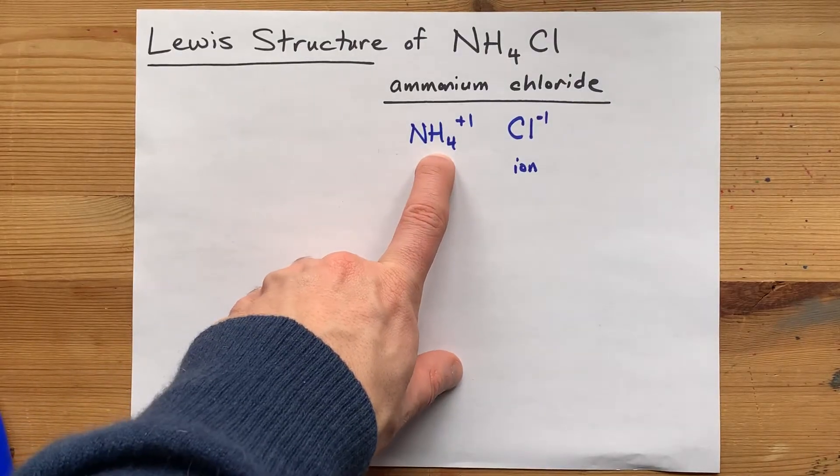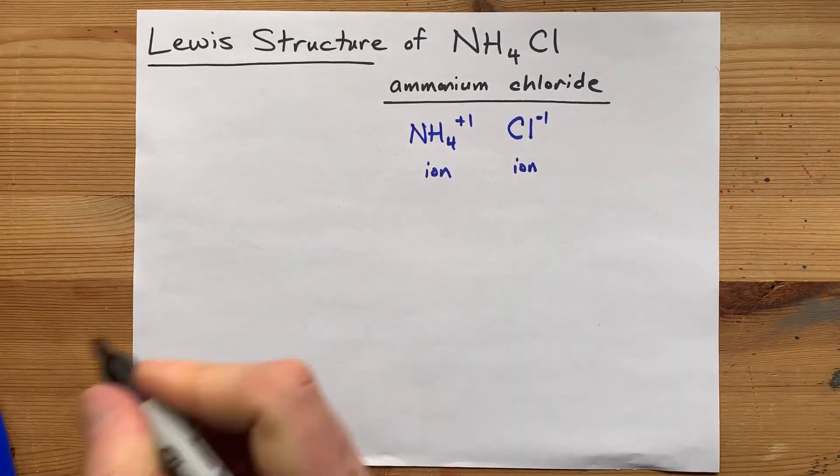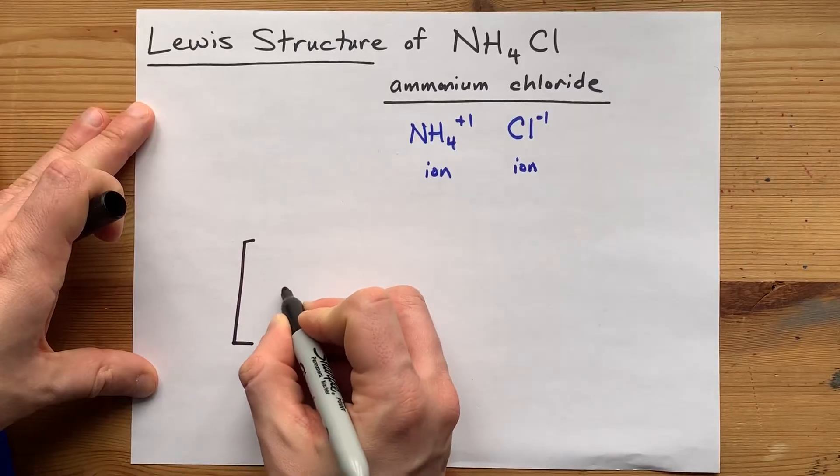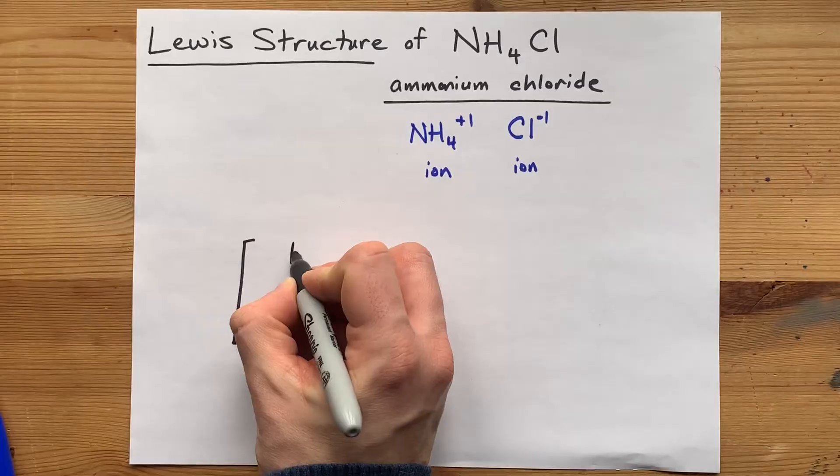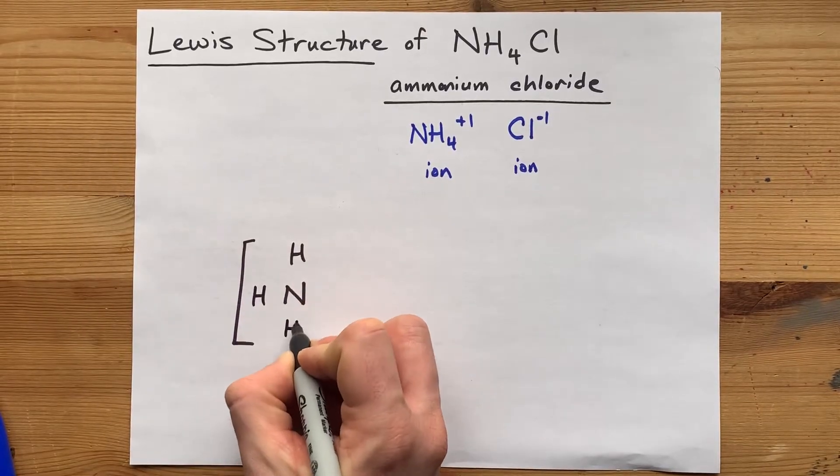The Lewis structure for NH4+ has a nitrogen in the center and four hydrogens around it. One, two, three, four.